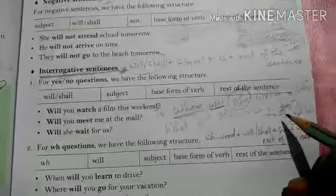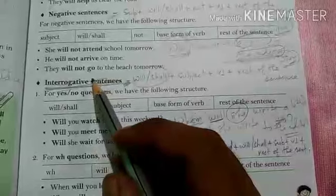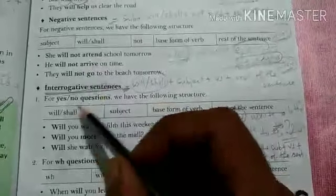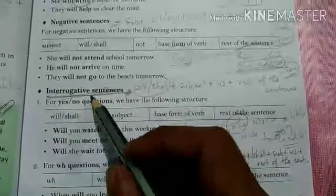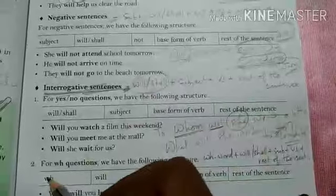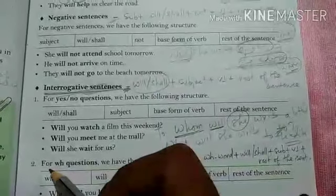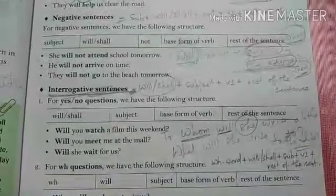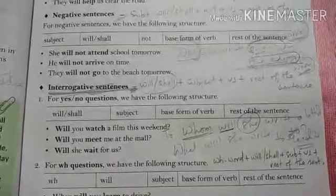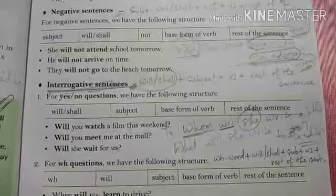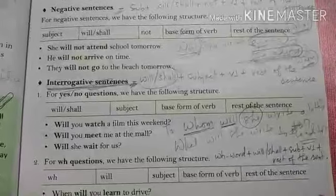I hope you have understood framing sentences in simple future tense — whether the sentences are affirmative, negative, or interrogative, both with helping verbs and WH words. If you still have any doubts, kindly raise your doubts in the class so that I may help you clarify them. This much for today's class, students. Thank you so much.